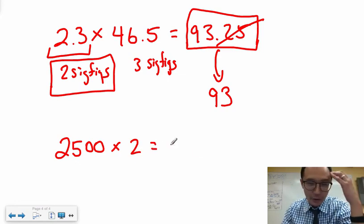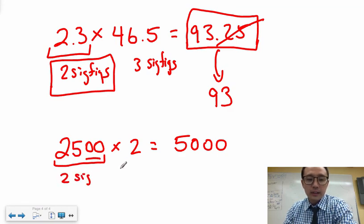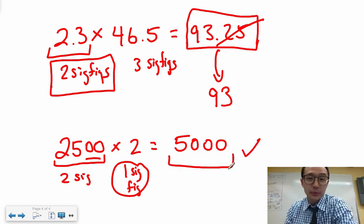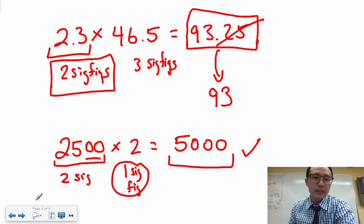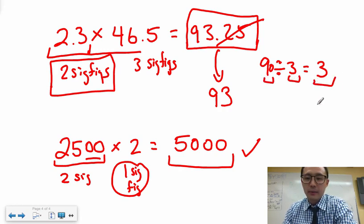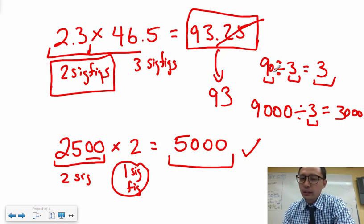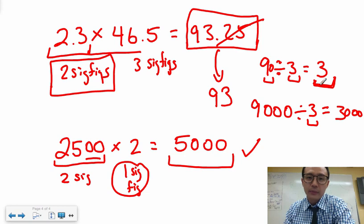Another example: 2500 times 2. The answer is 5000. The smallest sig figs in the question: 2500 has two sig figs and 2 has one sig fig, so the final answer must be in one sig fig — and 5000 is already in one sig fig. For division, the rule is exactly the same: 90 divided by 3 gives one sig fig in the answer. You always match the smallest number of sig figs from the question in multiplication and division, versus the cutoff method for addition and subtraction.